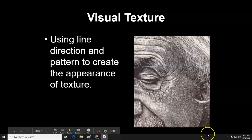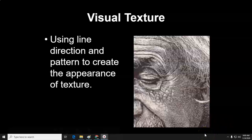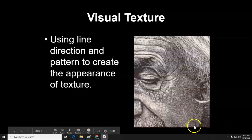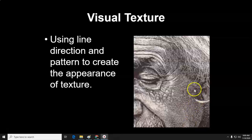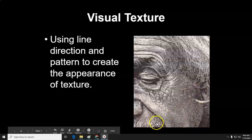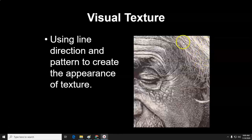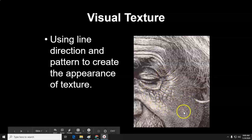Visual texture is when you use line, direction, and pattern to create the appearance of texture, such as in this close-up pencil drawing of Einstein's face. You can see how they created the texture of his mustache — it's bristly, as are his eyebrows — while his hair is still kind of wavy and coarse but smoother. Then you have the wrinkles in his forehead, the crow's feet under his eyes, and the texture of the skin, all done with just line and direction.